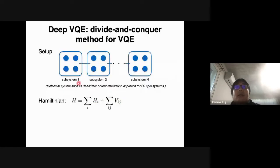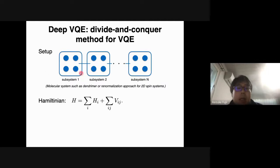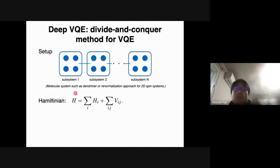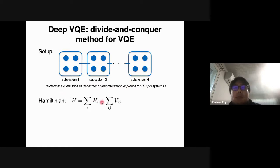The first topic is the Divide and Conquer method for VQE, which we call DeepVQE. The system we are considering has subsystems inside which qubits interact strongly with each other, and each subsystem interacts with others via inter-subsystem interactions. This is something like a molecule system such as dendrimer, or a two-dimensional system with a renormalization approach. The Hamiltonian consists of subsystem Hamiltonians and the interaction between these subsystems.